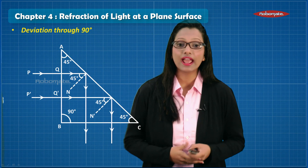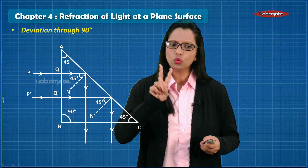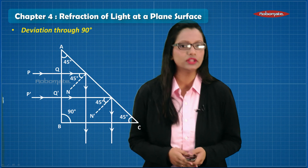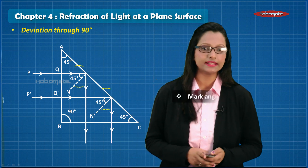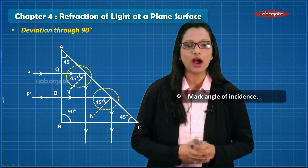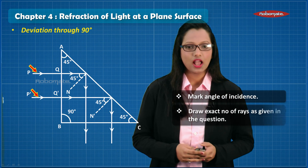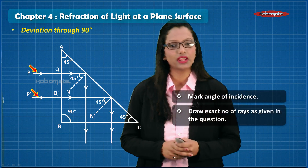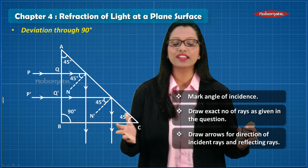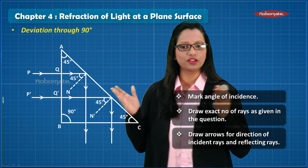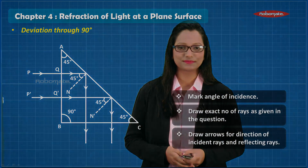When it comes to diagrams of total internal reflection in prisms, a few important facts: for an example like deviation through 90 degrees, do not forget to highlight the angle of incidence with its value. Draw the exact number of rays as given in the question paper, and do not forget to draw the arrows on both the reflected ray and the incident ray.